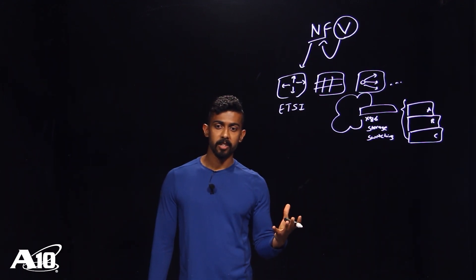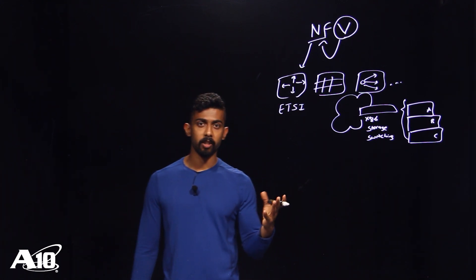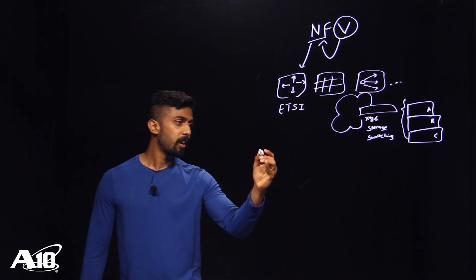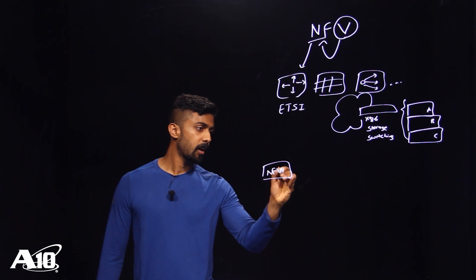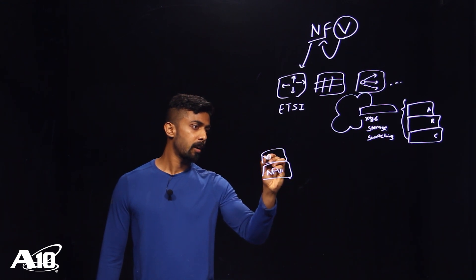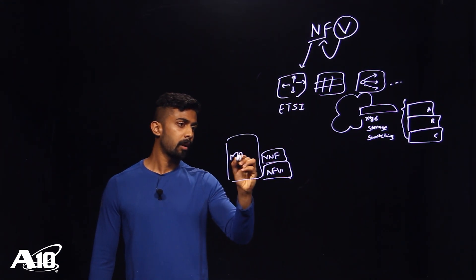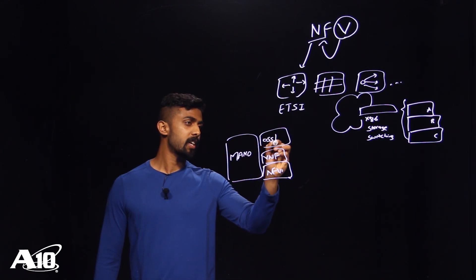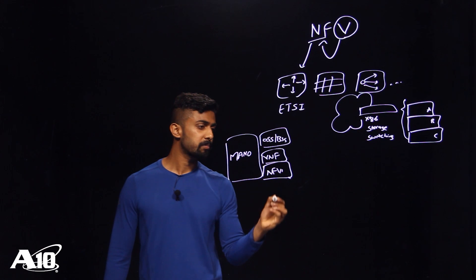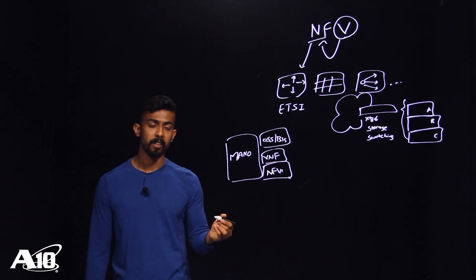The NFV architecture, on a very high level, has four major components: NFVI, VNF, MANO, and OSS and BSS components. Now let's talk about each of these components in a little more detail.